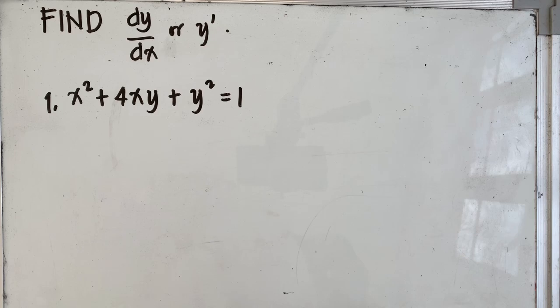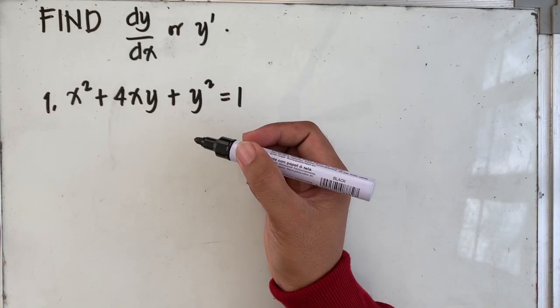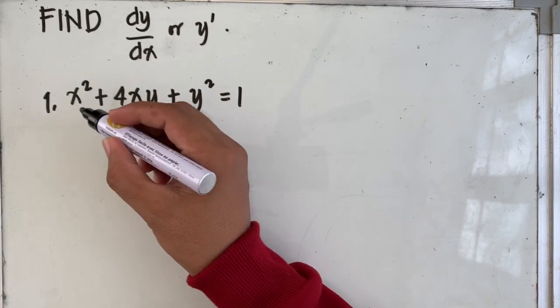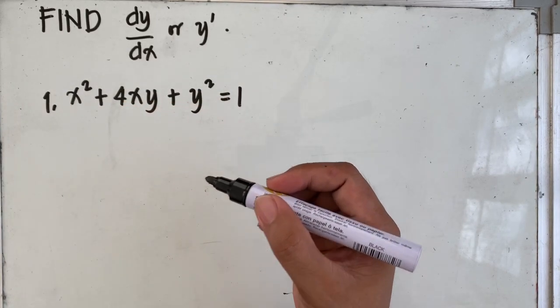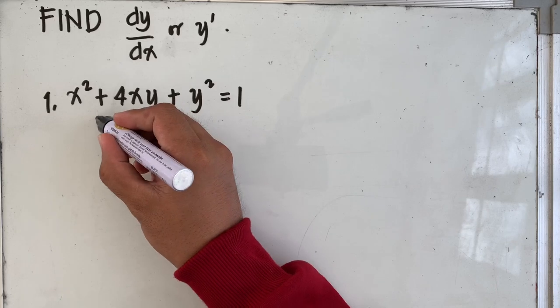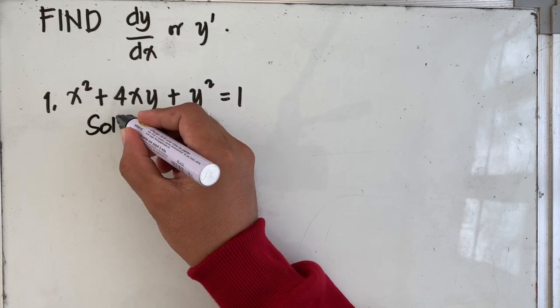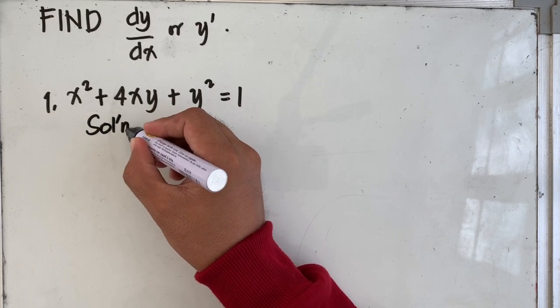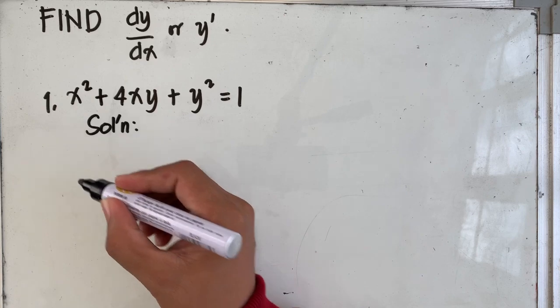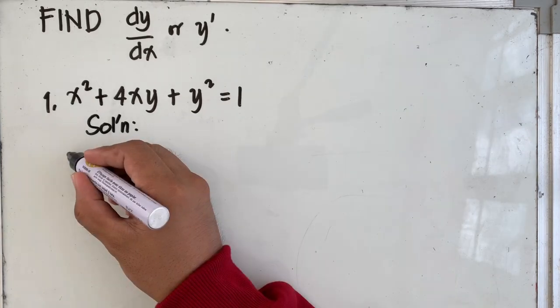In response to your request, I am going to solve additional problems for the topic derivatives in implicit form. Problem number one: find the derivative of y with respect to x of the equation x squared plus 4xy plus y squared equal to 1. Please take note that we are differentiating with respect to x.